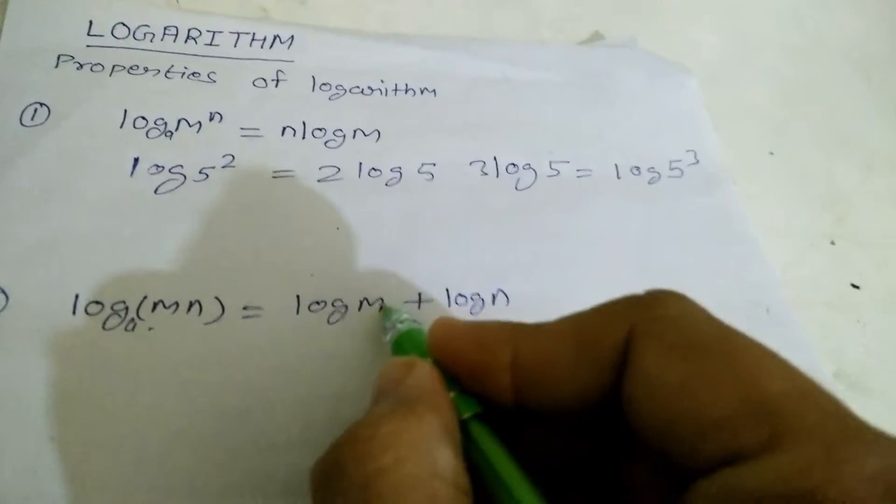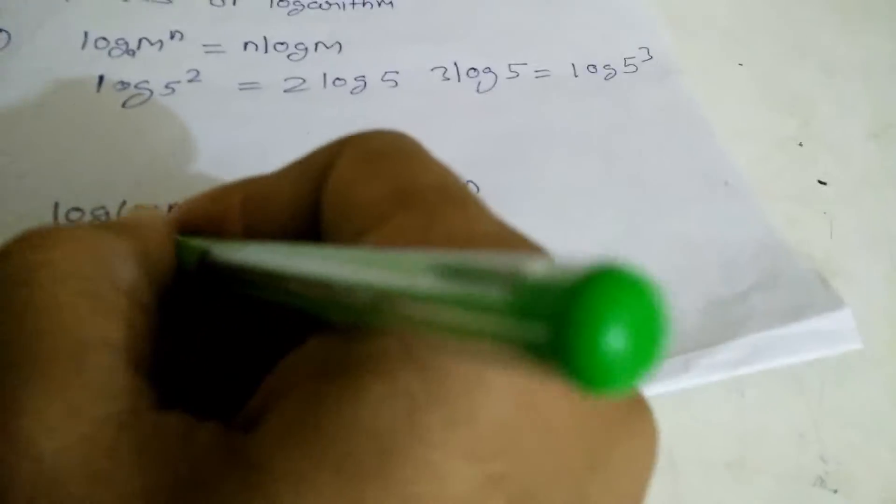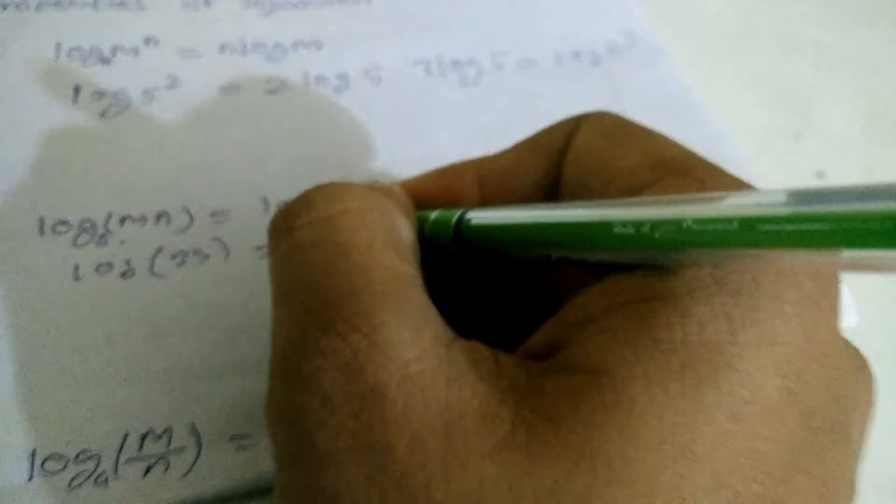That means if you take example log 35, first convert into prime factorization, 7 into 5, then we can write log 7 plus log of 5.